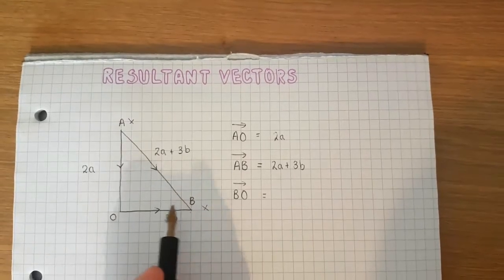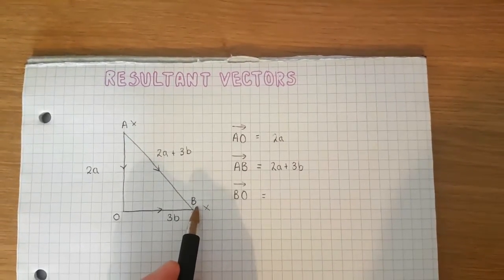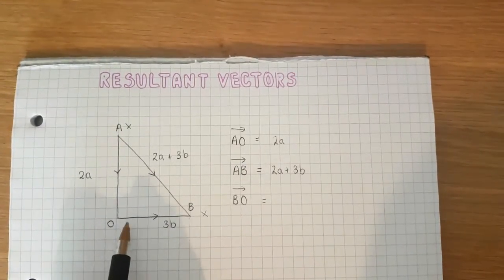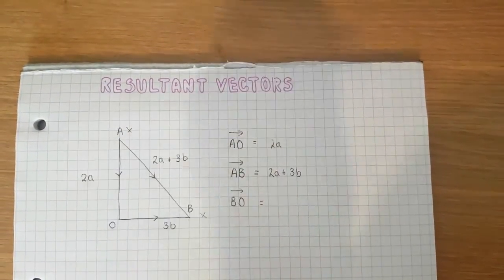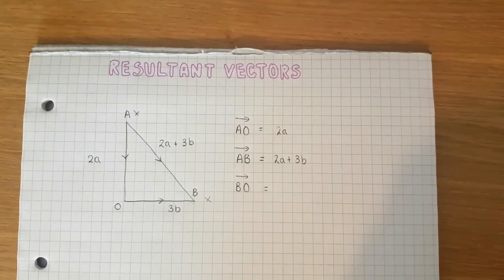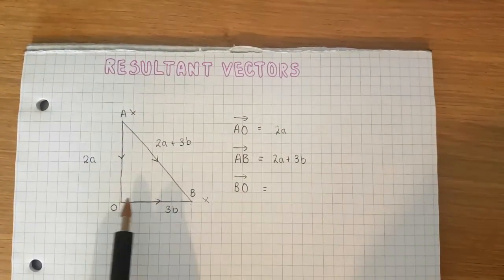We spoke about how when we go right it's a positive vector, but when we go this way it's a negative vector, so we can't just call it 3b. Stop the video and think about what you would use to describe going from this way to this way.